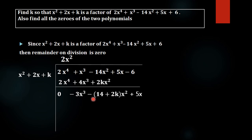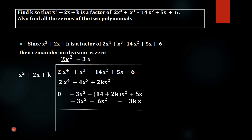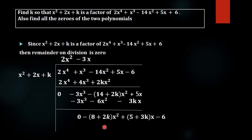After subtracting we get 0, then -3x³, then (-14 - 2k)x². We bring down +5x. To eliminate -3x³, we take -3x as the next term of the quotient. Then -3x into x² gives -3x³, -3x into 2x gives -6x², and -3x into k gives -3kx. Subtracting gives 0 for the x³ term. For the x² coefficient: -14 + 6 = -8, and -2k - 0 = -2k.